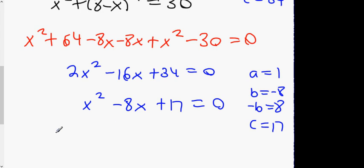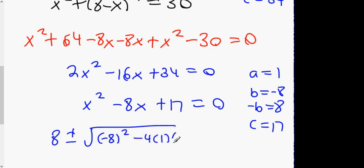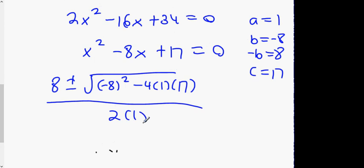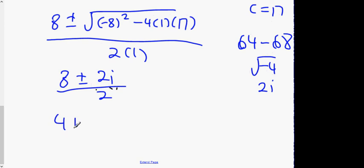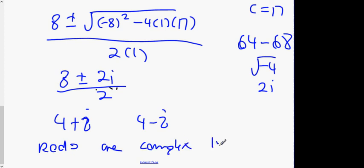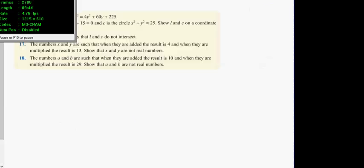Put it into the minus-b formula: 8 plus or minus the square root of b squared minus 4ac, all over 2 times 1. That's 8 plus or minus the square root of 64 minus 68, which is the square root of minus 4. The square root of minus 4 is 2i. So 8 plus or minus 2i, all over 2, gives x equals 4 plus i or x equals 4 minus i. Roots are complex, therefore the line doesn't intersect the circle.